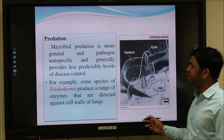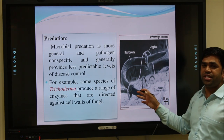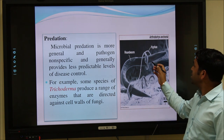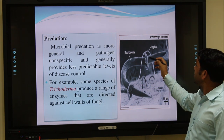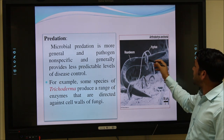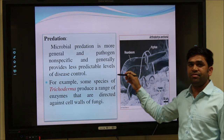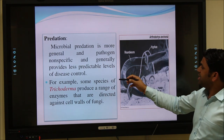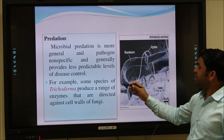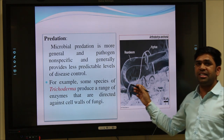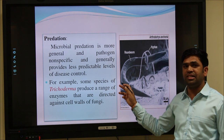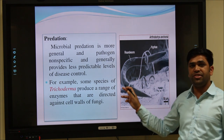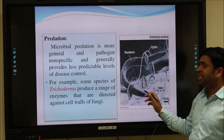Predation means the complete destruction of the pathogen by the biocontrol agent. This photograph shows a round-form parasite on different plants controlled by fungal hyphae. This is an example of Trichoderma being used to control different nematodes in plants. Nematodes are also major disease-causing pathogens in different crops.